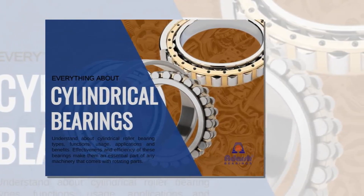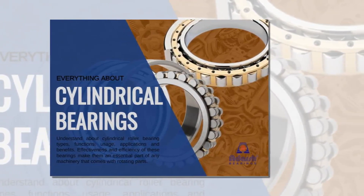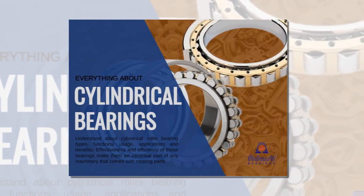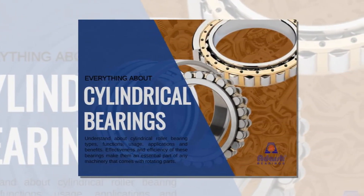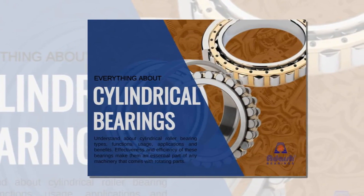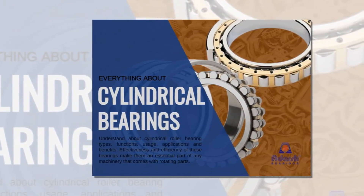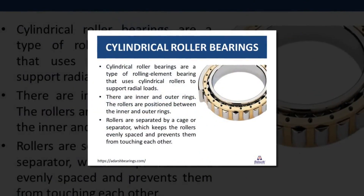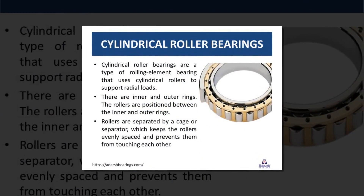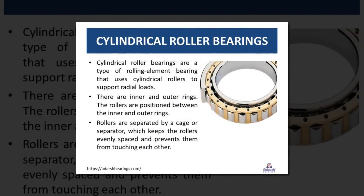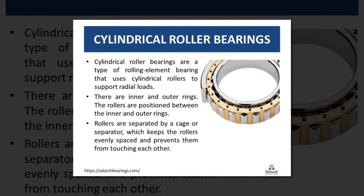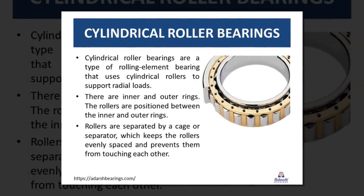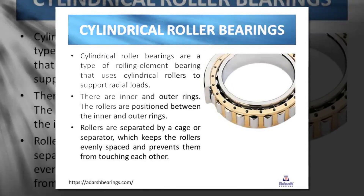Today, bearings are the most useful components as they reduce friction and facilitate smooth rotation of all the machines we use. Cylindrical roller bearing is one type of bearing — let's see its use, advantages, and applications. This bearing uses cylindrical rollers to support radial loads. The rollers are positioned between the inner and outer rings with the help of a cage or separator.